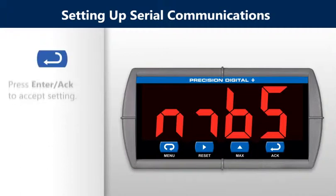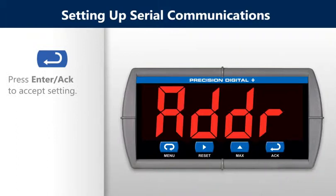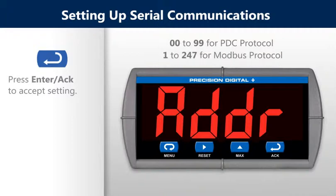Press the enter button again to advance to the address menu. When using more than one meter in a multi-drop mode, each meter must be provided with its own unique address. The address may be programmed from 0 to 99 for PDC protocol and from 1 to 247 for Modbus protocol.